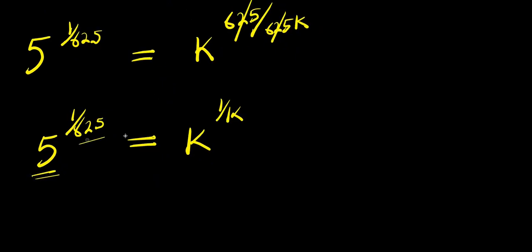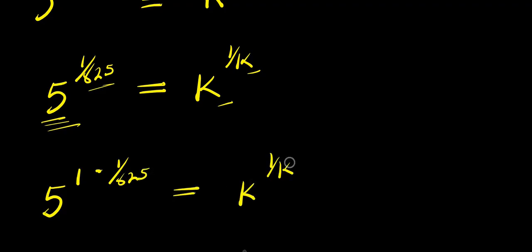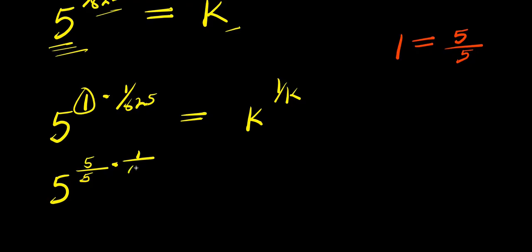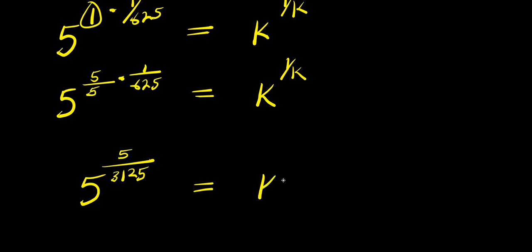Now, to make the base and exponent structure match on both sides — similar to how k and k match on the right — I can express this as 5 to the power 1 times 1 over 6/5, equals k to the power 1 over k. I can express that 1 as 5 over 5, so I have 5 to the power 5 over 5 times 1 over 6/5, equals k to the power 1 over k. This gives 5 divided by 5 times 6/5, which is 31/5.